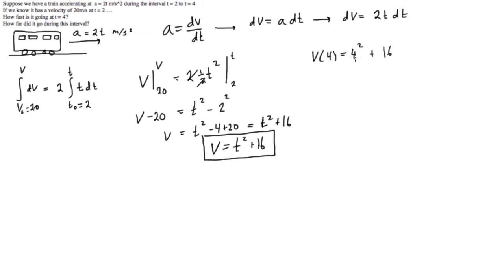So v at the velocity at time equals 4 is 4 squared plus 16. So v at t equals 4 is equal to 16 plus 16, which is equal to 32 meters per second. So check it out, we're done the first part of the problem. We could easily find also the velocity at any time now. But now we want to move on to part 2 where we're solving for how far did it go during this interval.